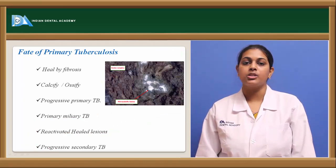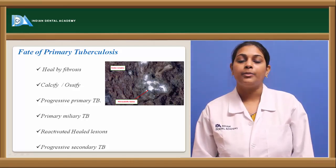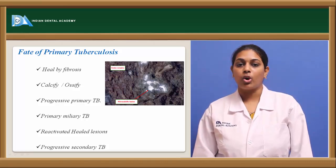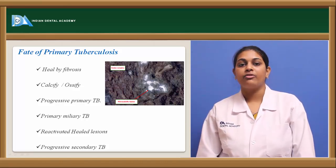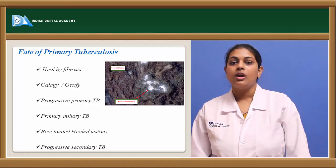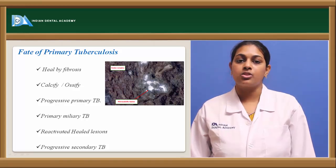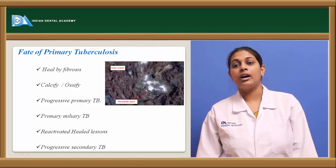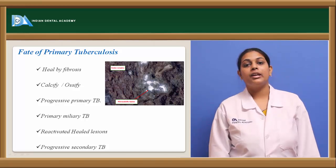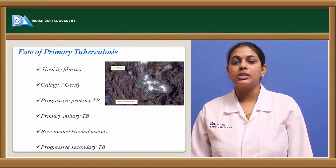Coming to the fate of primary tuberculosis: the sequential changes after the primary complex is formed. These lesions usually heal by fibrosis with progressive peripheral fibrosis and central enlarging caseation necrosis. Long-standing lesions may either undergo calcification or ossification. These primary lesions may also progress rather than being healed, spreading throughout the body as disseminated tuberculosis.